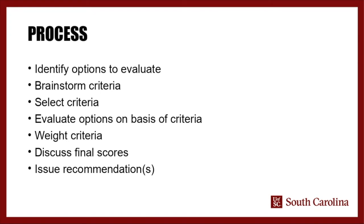Here are the basic steps. First, identify options to evaluate — in our case, what repository software would we consider. Then you brainstorm criteria; the manual says about six to twenty criteria for success. It's important to bring diverse stakeholders in throughout the process, especially at this stage. The next step takes the most time: you evaluate each of your options on the basis of your criteria. The tool for this step is called a matrix — in our case, an Excel sheet with options as columns and criteria as rows. Scores are normalized so that everything is on the same scale.